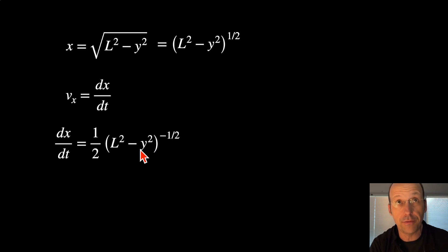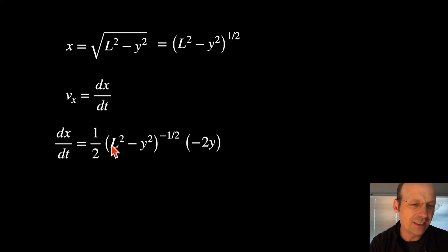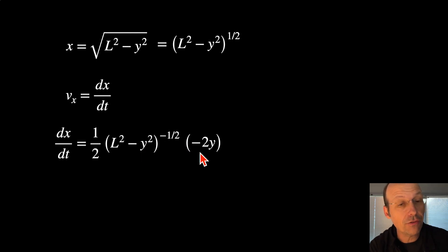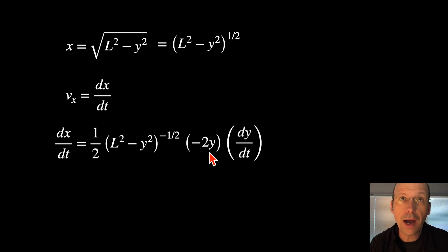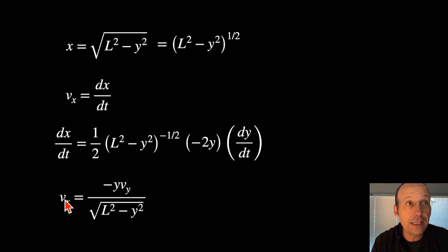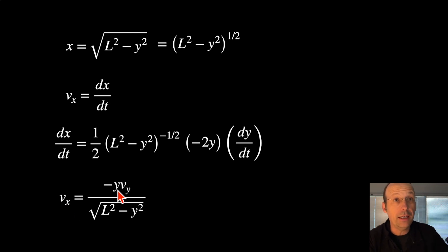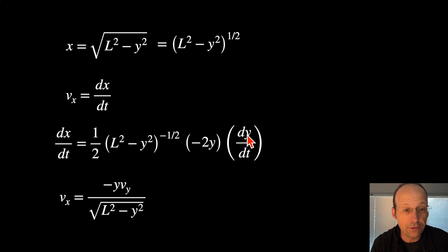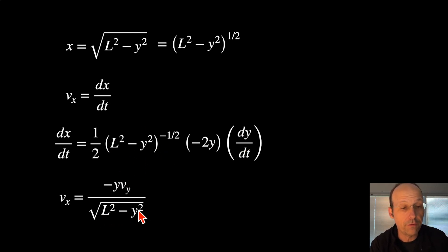L is constant so there's no derivative there, but Y is not constant with time. So I take the derivative and multiply, getting negative 2Y — because it's actually 0 minus 2Y, using the power rule. But wait, I'm still not done. I have to take the derivative of Y, and the derivative of Y is dy/dt. That's the mistake I would have made as an undergraduate — not including dy/dt. We call dy/dt the Y velocity, VY. So the velocity in the X direction is negative Y times VY divided by the square root of L squared minus Y squared — the two and one-half cancel, but the negative stays.